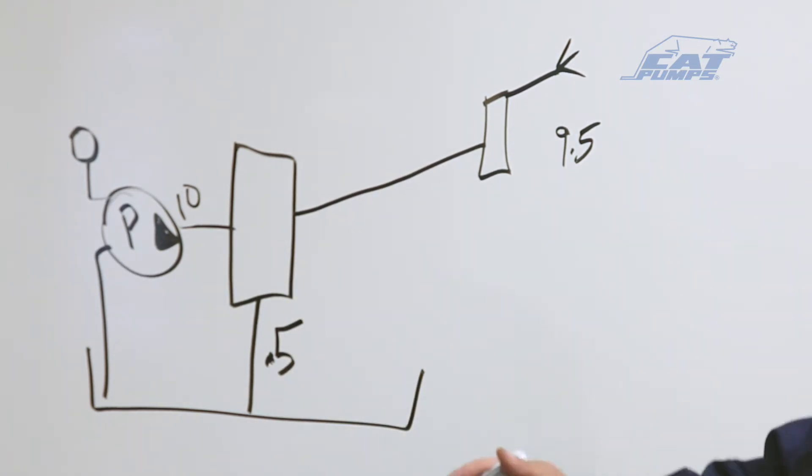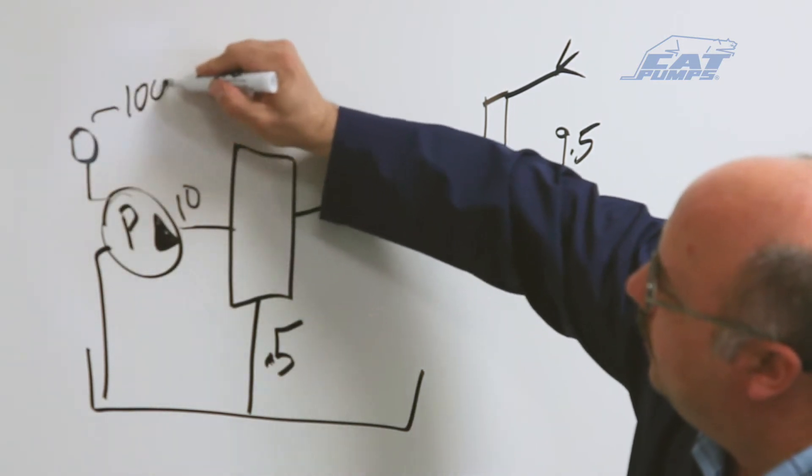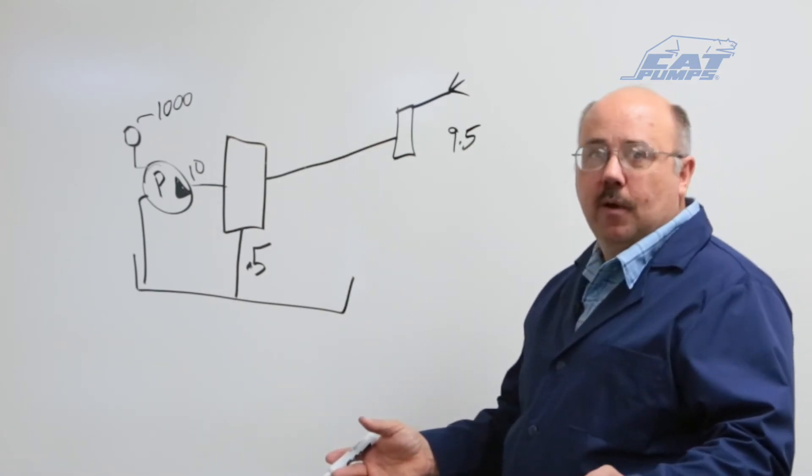When this system is running you'll build a discharge pressure. And in this case we're going to use a thousand psi for the pressure. And as the system is running, everything is very well.